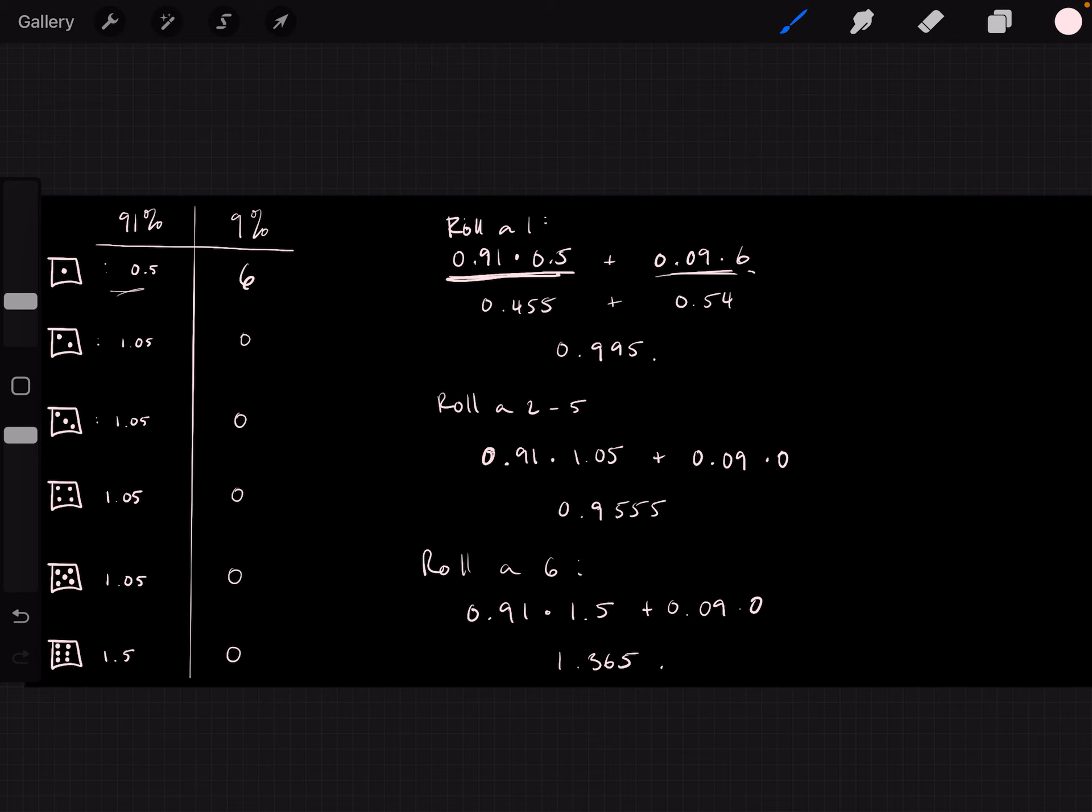If you roll a 1, then your expected arithmetic return would be 0.995 for every roll you make.